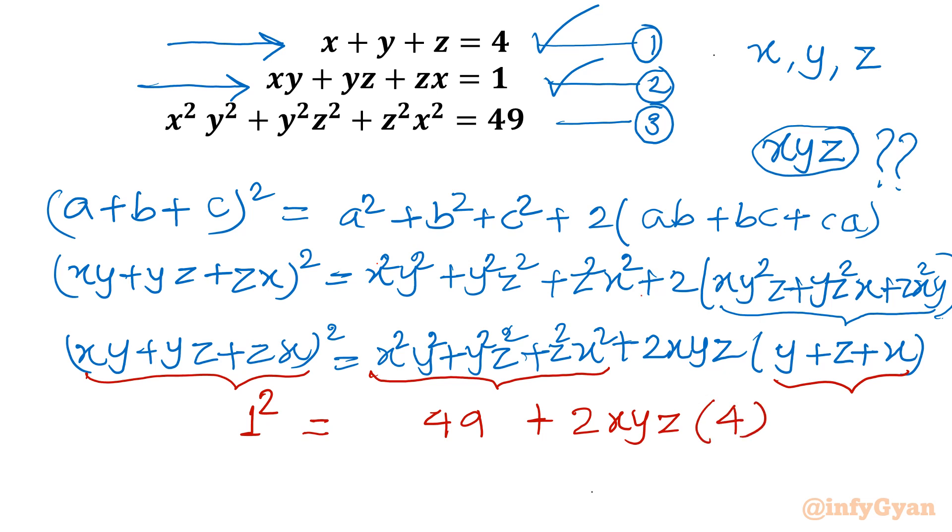So I can write, take away 49 from both sides: minus 48 equals 8 times xyz. Divide both sides by 8. So xyz will become minus 6. Now task is done.